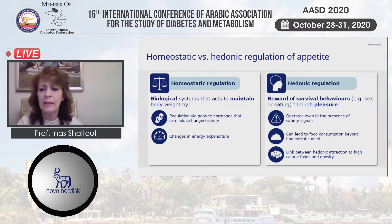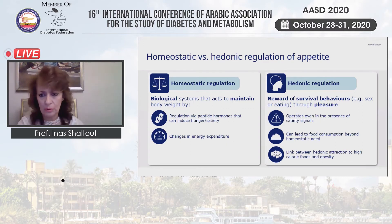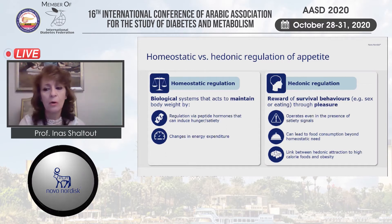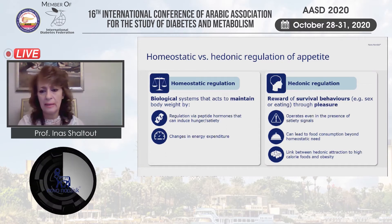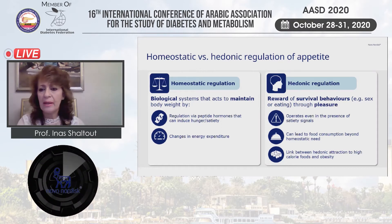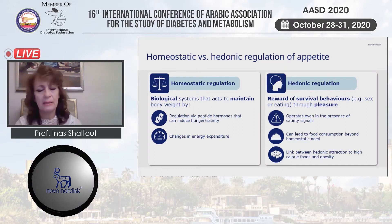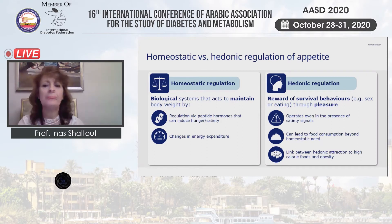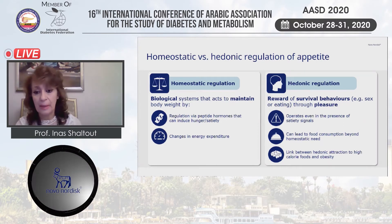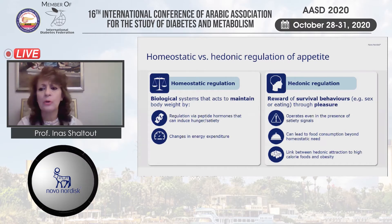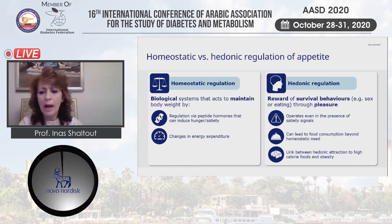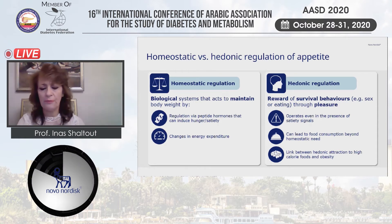The hedonic regulation is a form of reward or survival behavior — for example, eating or pleasures like sex. They operate even in the presence of satiety signals. If the person is not hungry, they can engage in hedonic eating just for pleasure. It can lead to food consumption beyond homeostatic needs, and it is linked to high-calorie foods, especially sugary desserts or fatty foods.